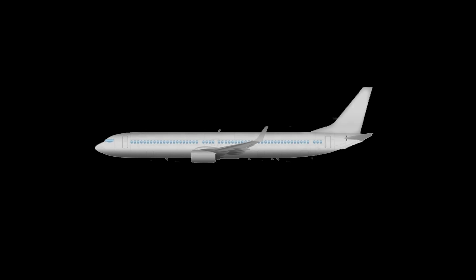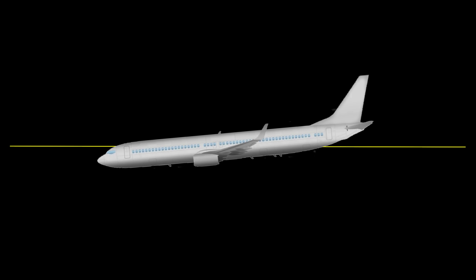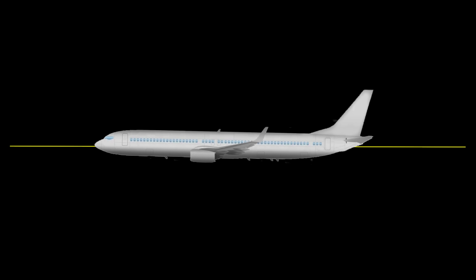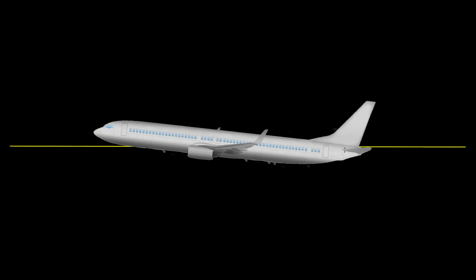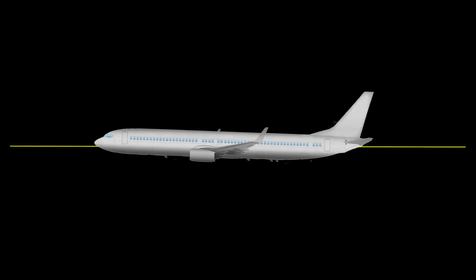Aircraft pitch refers to the angle of the aircraft relative to its local horizontal, running along the length of the aircraft. So if its nose is pointing below the aircraft's horizontal, then it's pitching down. Conversely, it's pitching up when the nose is pointing above its horizontal, and when its nose is pointing along the horizontal, it has zero pitch.